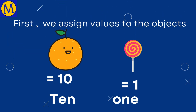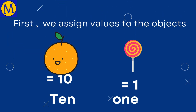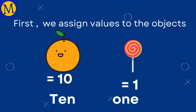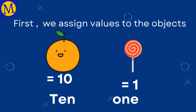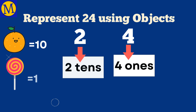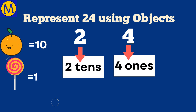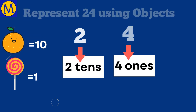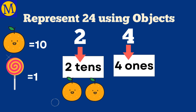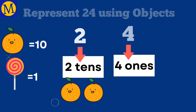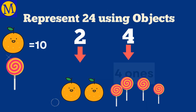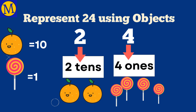Next step is to assign values to the objects. Let one 10 be equal to an orange, and let a candy's value be 1. Now let's represent 24 using objects: two oranges for two 10's, and four candies for four 1's.